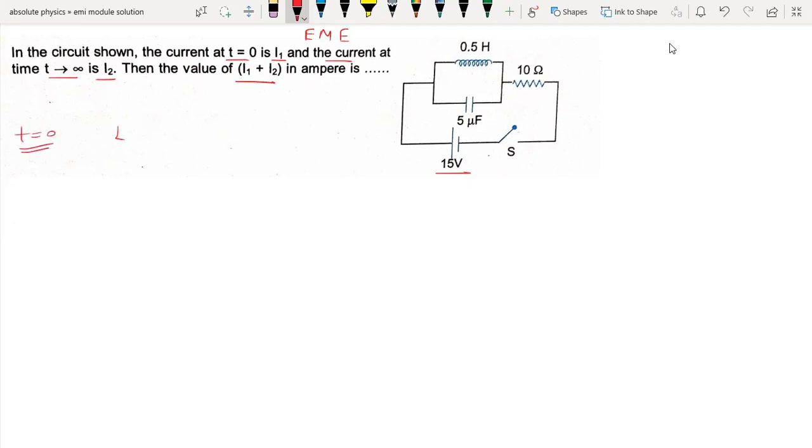At t equals 0, the inductor L is open circuit and the capacitor C is short circuit. So L is open and C is short.